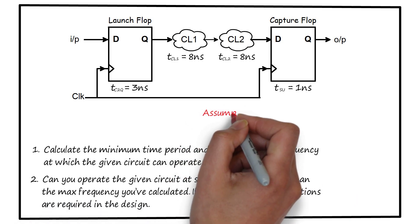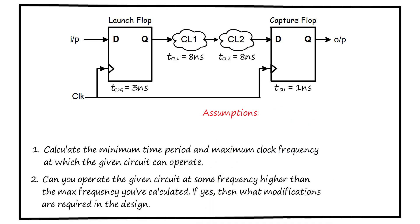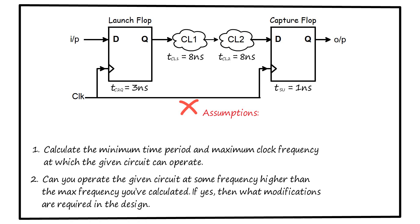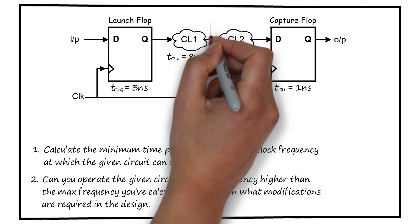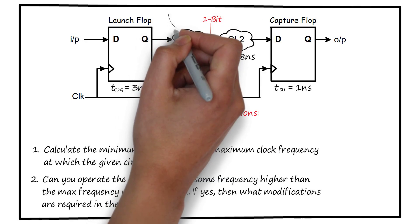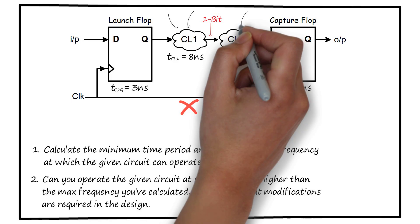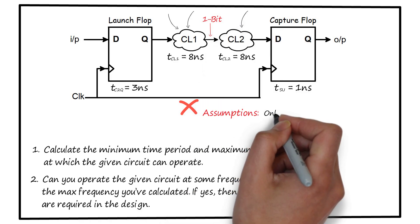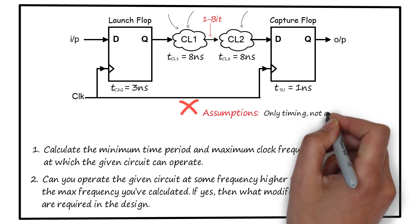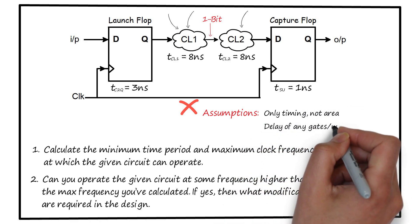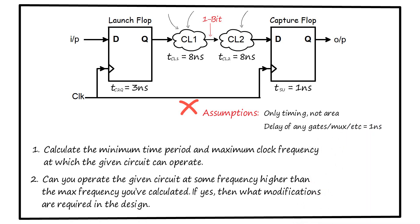There are some assumptions and conditions to keep in mind. You cannot modify the clock path — that is, you can't add any buffers there. Second, the signal going from CL1 to CL2 is a single-bit signal, and any other inputs to these combinational logics are non-critical, meaning they'll take minimal time to affect the output. Third, we are concerned only with timing and not area. And last, the delay of any discrete combinational element would be 1 ns.